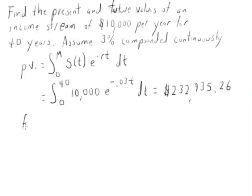Let's do the same thing for future value. Our formula for future value is 0 to m, s(t), that's our income stream, e to the r(m-t) dt.